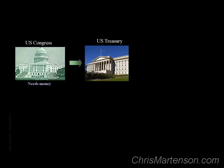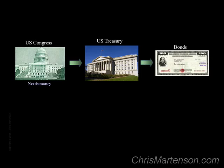Congress doesn't actually have any money, so the request for additional spending gets passed over to the Treasury Department. You may be surprised, or dismayed, or perhaps neither, to learn that the Treasury Department lives hand-to-mouth and rarely has more than a couple weeks of cash on hand, if that. So the Treasury Department, in order to raise cash, will print up a stack of Treasury bonds, which are the means by which the U.S. government borrows money.